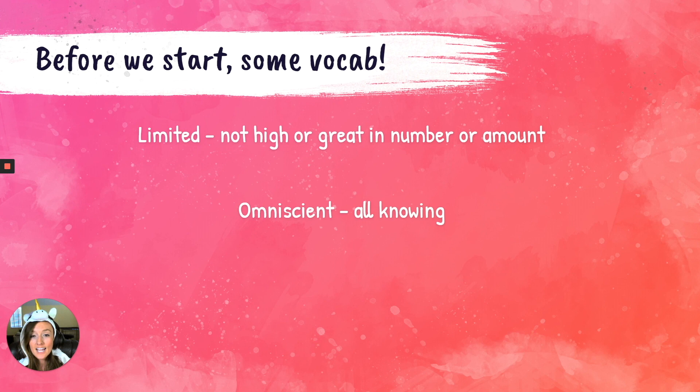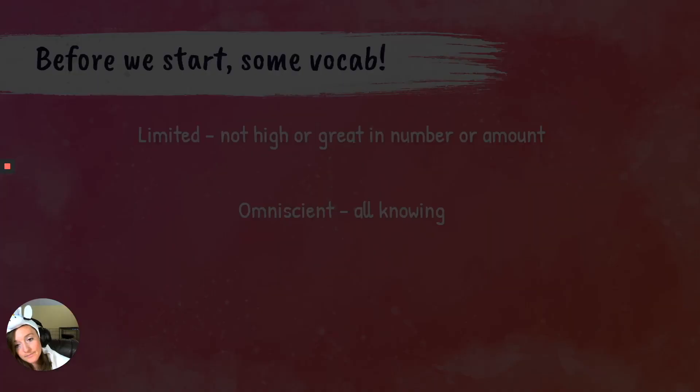The first vocabulary word is 'limited,' which means not high or great in number or amount — you're kept at a limit, like the speed limit. And 'omniscient,' which means all-knowing.